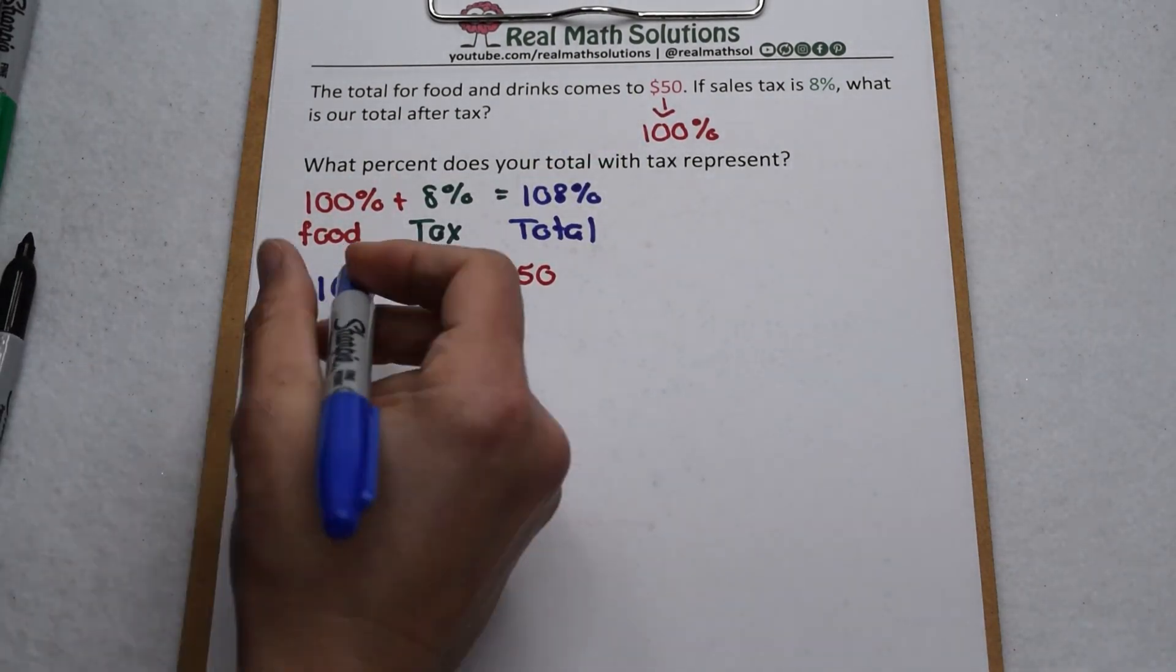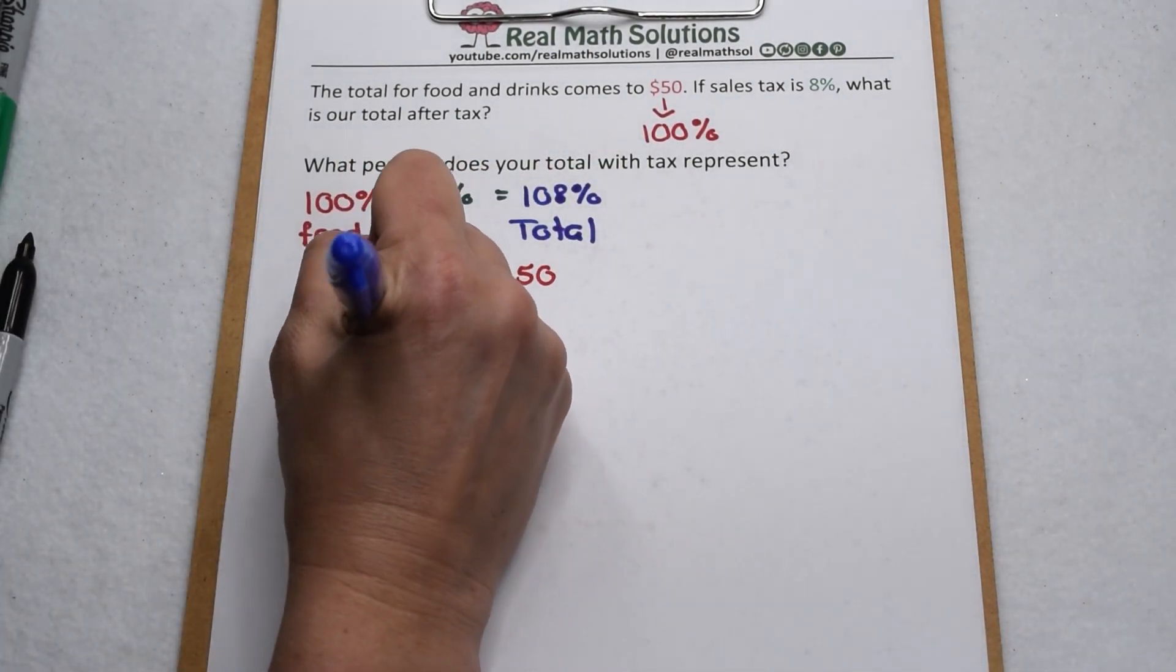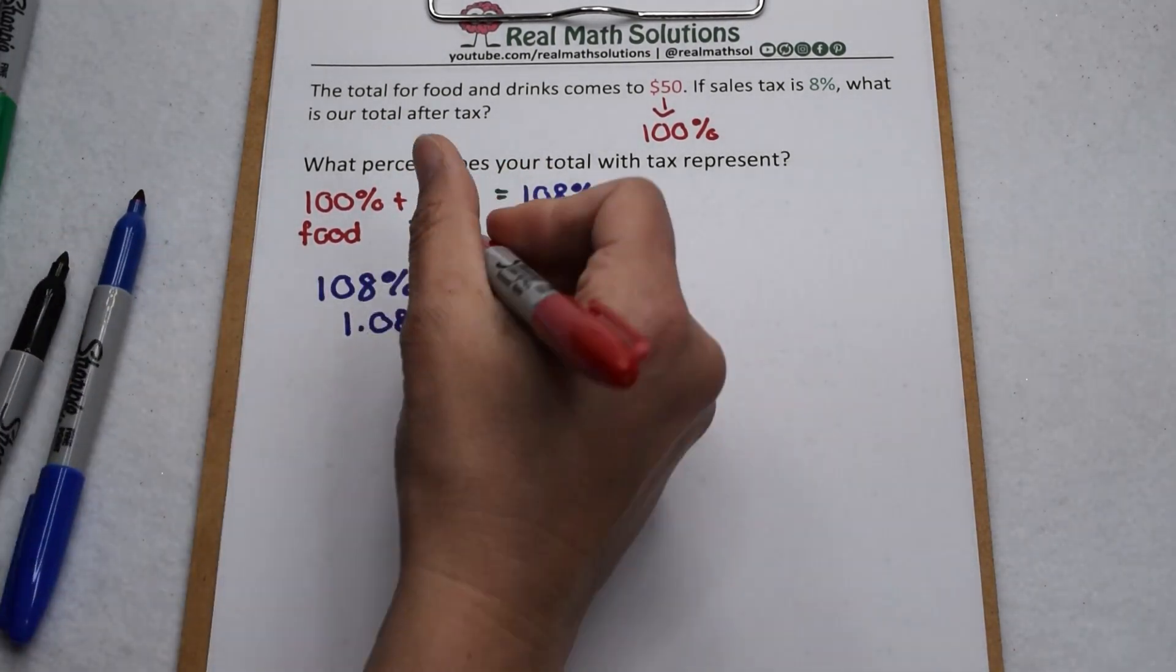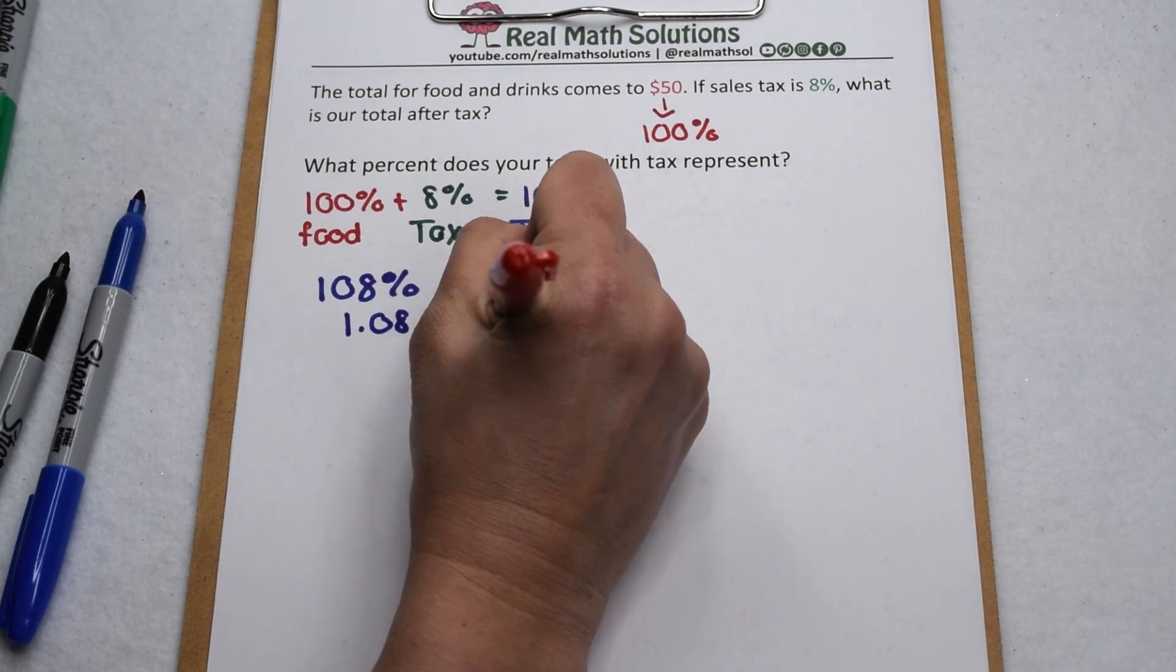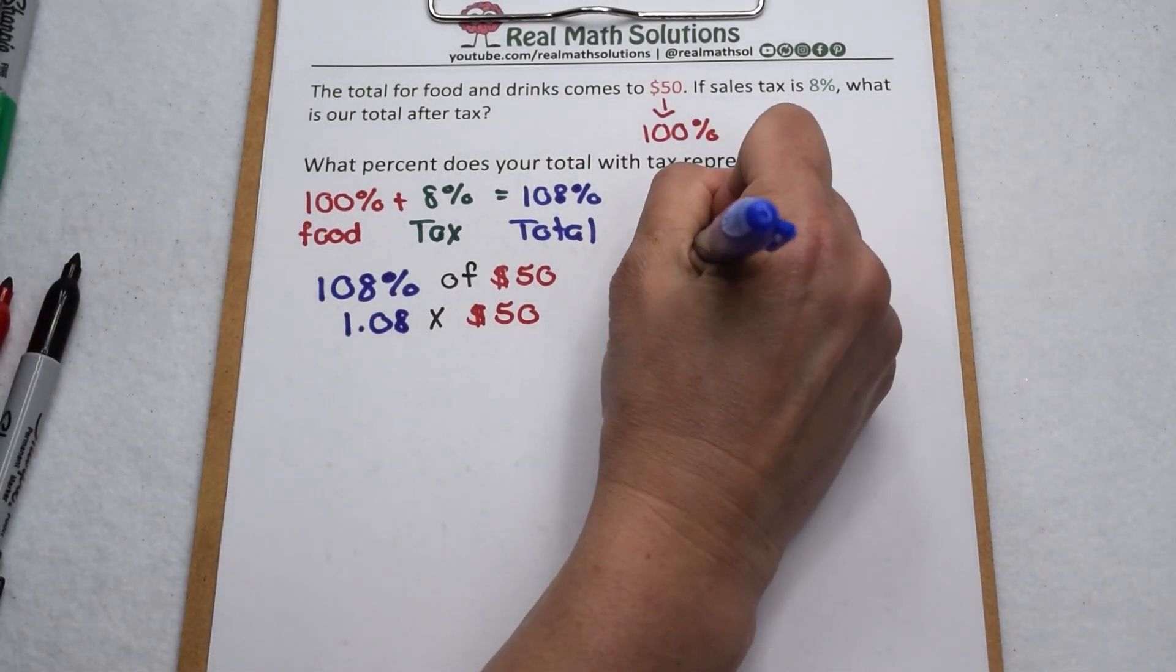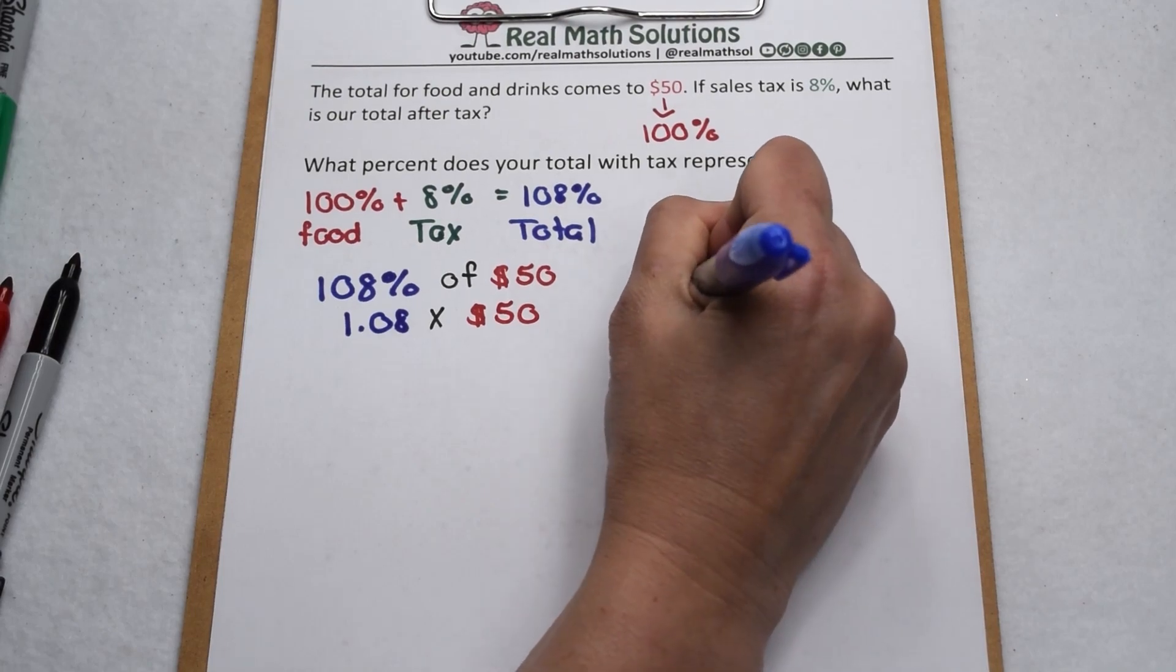Again, to solve this, we're going to change 108% to a decimal, so that's 1.08. Of is still our key word for multiplication, and we're multiplying by what we actually bought, $50 worth of food and drinks. So now we're going to multiply that out. 1.08 times 50.